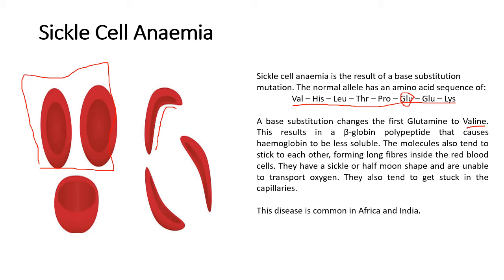Red blood cells are typically convex disc-shaped cells, able to transport oxygen significantly in that shape. However, when glutamine is changed to valine, the red blood cells change shape as well. Because valine is hydrophobic, it causes curving away from the water solution in the body, changing the beta-globin in hemoglobin to become less soluble. These cells tend to stick together and form long fibers, giving them a sickle shape — which is why this is called sickle cell anemia. As a result, they can get stuck in the capillaries and are unable to transport oxygen as well as they should.